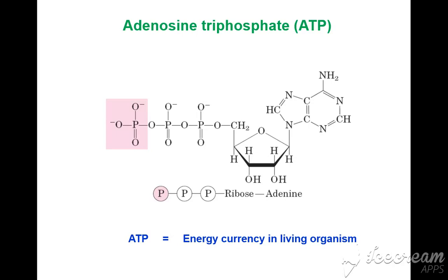Adenosine triphosphate (ATP) is the energy currency in living organisms. It has three phosphate groups, one ribose sugar, and one adenine group.